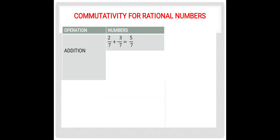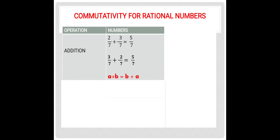Similarly, let us now check the commutative property for rational numbers. Under addition, let us add two rational numbers. 2 upon 7 plus 3 upon 7 equals 5 upon 7. Since the denominator is common, we write it only once and 2 plus 3 equals 5. Let us change the order: 3 upon 7 plus 2 upon 7 gives the same answer. Therefore, for any two rational numbers, a plus b equals b plus a. Hence, addition is commutative.